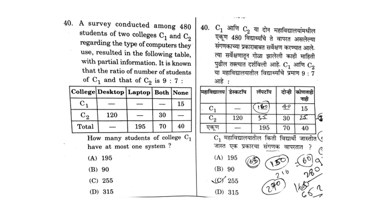Moving on to the next question, which was a bit tough because there are many things you needed to calculate. A survey was conducted among 480 students of two colleges, C1 and C2. From those 480 students, they gave the ratio — college C1 had 270 students and college C2 had 210 students.